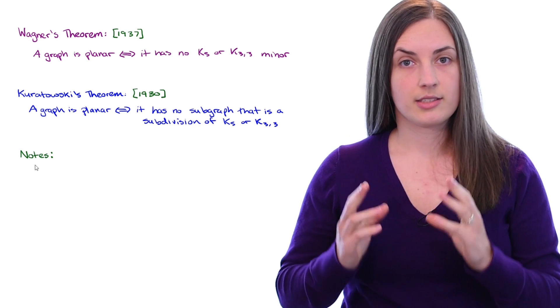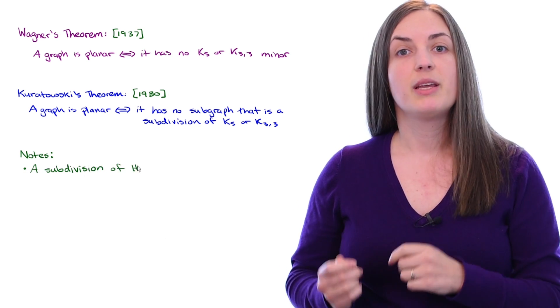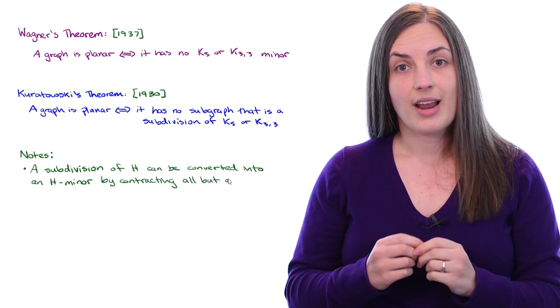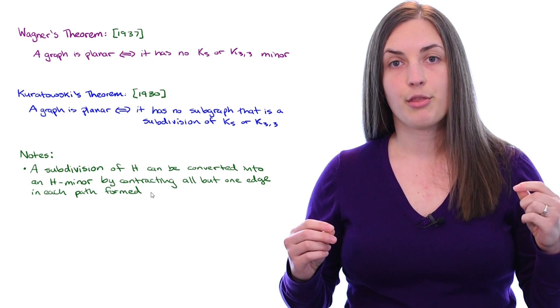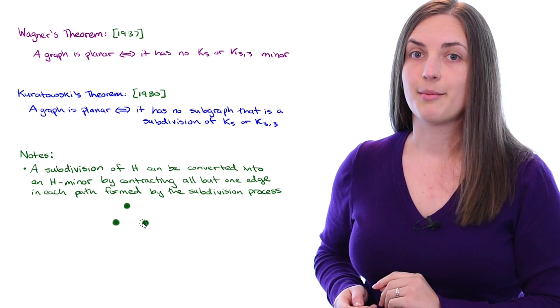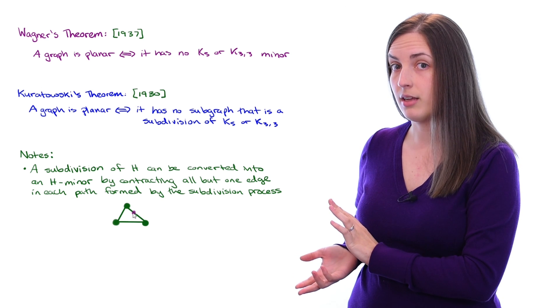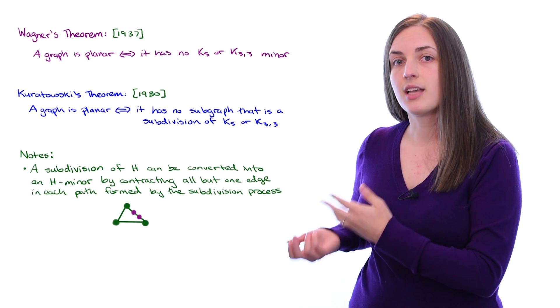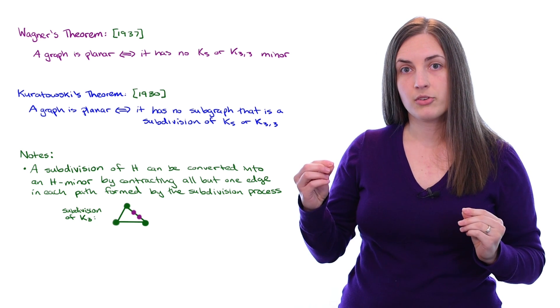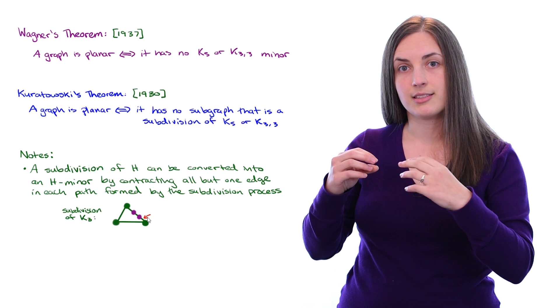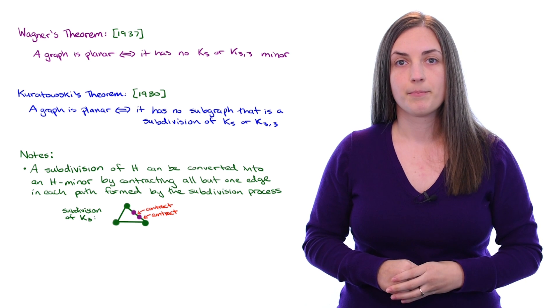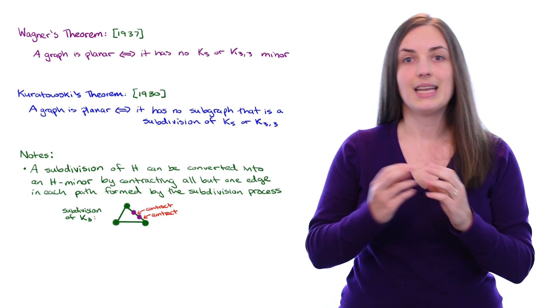I'd like to briefly discuss the difference between having a subdivision of a particular graph within your graph and having a minor. First we notice that a subdivision of H can be converted into an H minor, simply by contracting every edge but one along the path that was formed by the subdivision process. Here's a small picture as an example. If we have K3 which has been subdivided to give us this subdivision, we can look at the path and simply contract all but one of those edges and we'll end up with K3. You can convert a subdivision into a minor.